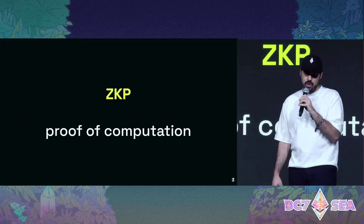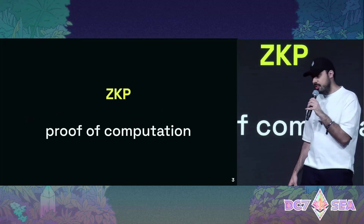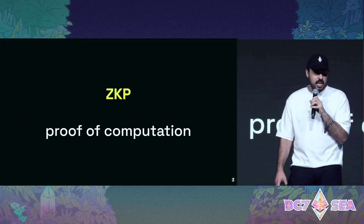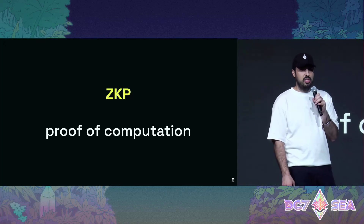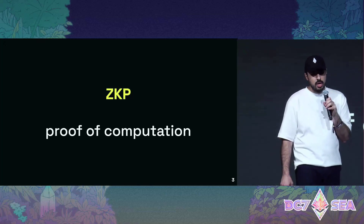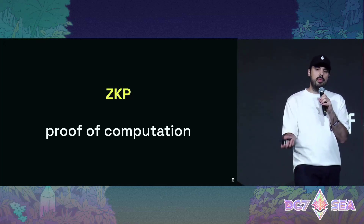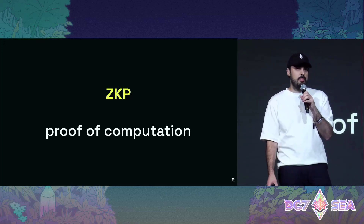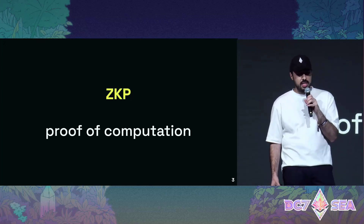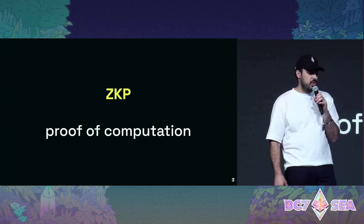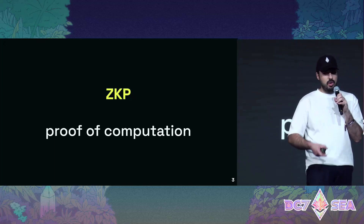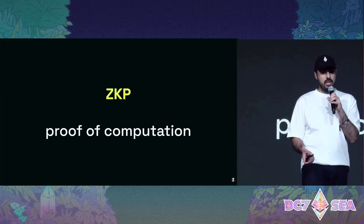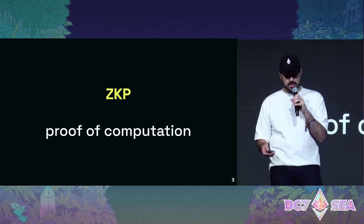Zero knowledge proofs make one party, the prover, able to prove to another party, the verifier, that a statement is true without revealing any information beyond the mere fact of the statement's validity. For example, you can use this to prove your age is above some threshold without saying exactly what your age is.